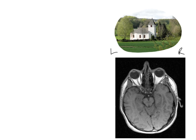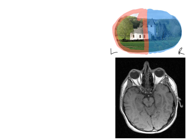We're going to diverge a little from the bitemporal hemianopia approach. We'll start by looking out at the scene and use blue to represent the right half of our visual field, and red to represent the left half of our visual field. We'll then go back and look at the retinae to see which parts are looking at the blue and red portions.